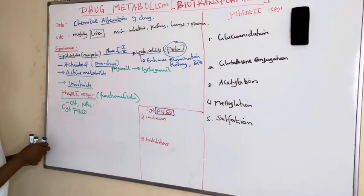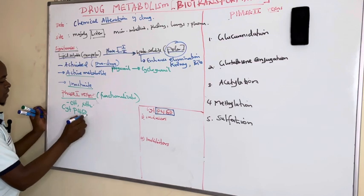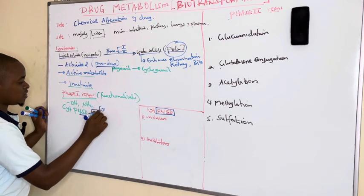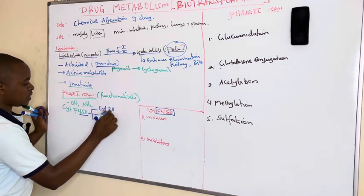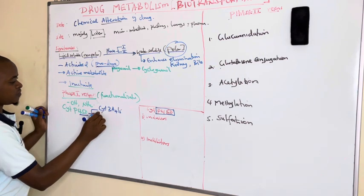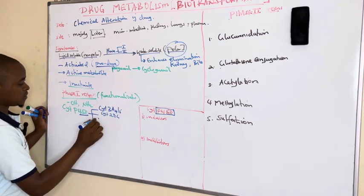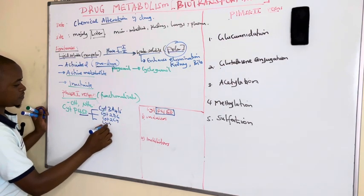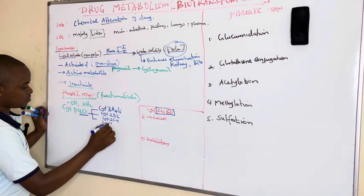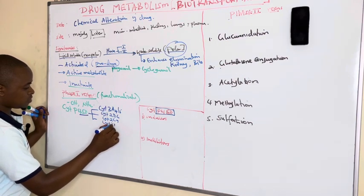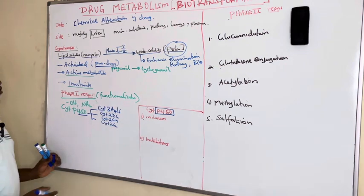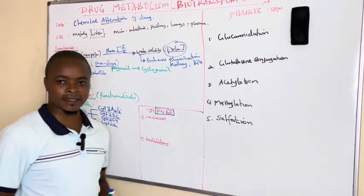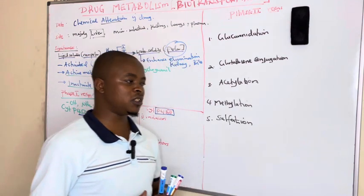The cytochrome P450 isoenzymes catalyze major oxidation and reduction reactions. The different isoenzymes include the major one, cytochrome 3A4/5, followed by cytochrome 2D6, cytochrome 2C9, and cytochrome 2E1, which catalyze different oxidation and reduction reactions.